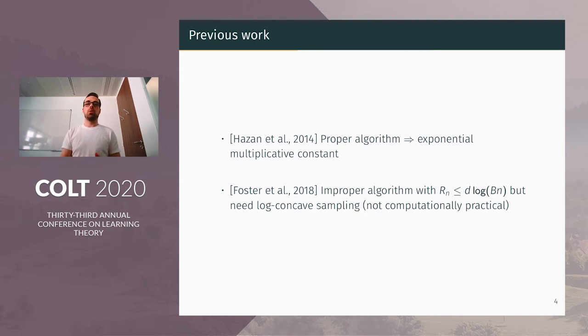They have shown a lower bound on the regret, which is polynomial for any algorithm with a linear prediction function. But this lower bound doesn't apply to improper algorithms, because Foster and Quotter have shown that an improper algorithm can achieve a regret bounded by D log(BN), so a statistical performance which is unattainable by any proper algorithm.